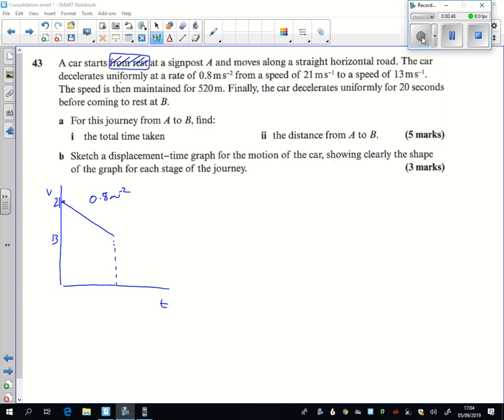So look, from there to there, it's going down 8. So 8 divided by 0.8 is 10. Here to here, it takes 10 seconds to do that then.